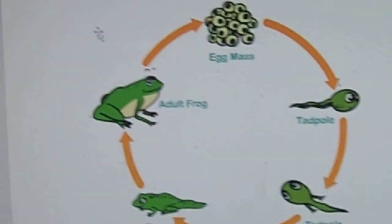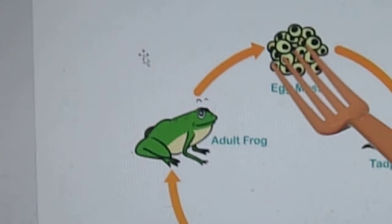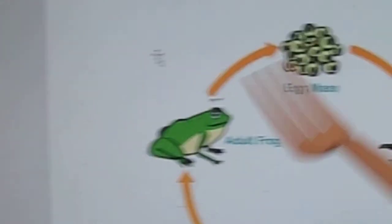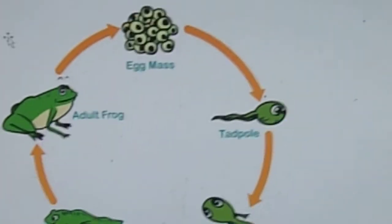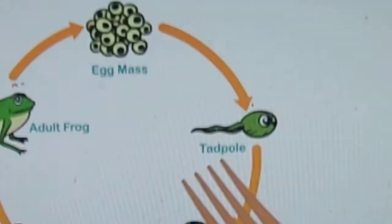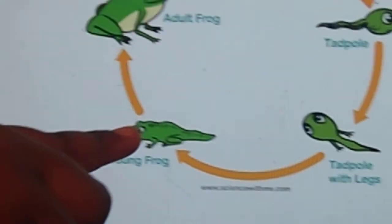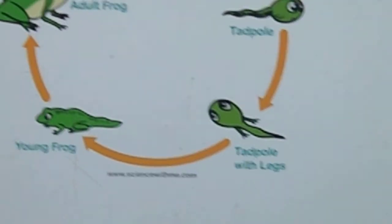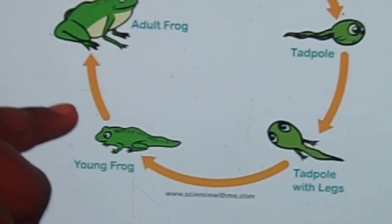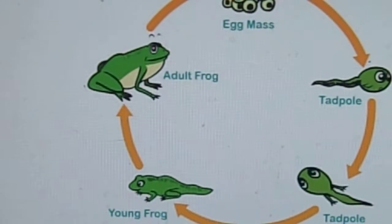Let me ask you a question. If I was to point to this stage right here, is that the first stage? Yes. Point to the second stage there for me — point to it right here. That's the tadpole stage, right? Yes. Let's go after the tadpole stage — what happens? The tadpole with legs comes. And then comes a young frog with a tail, and then what comes? The adult frog.